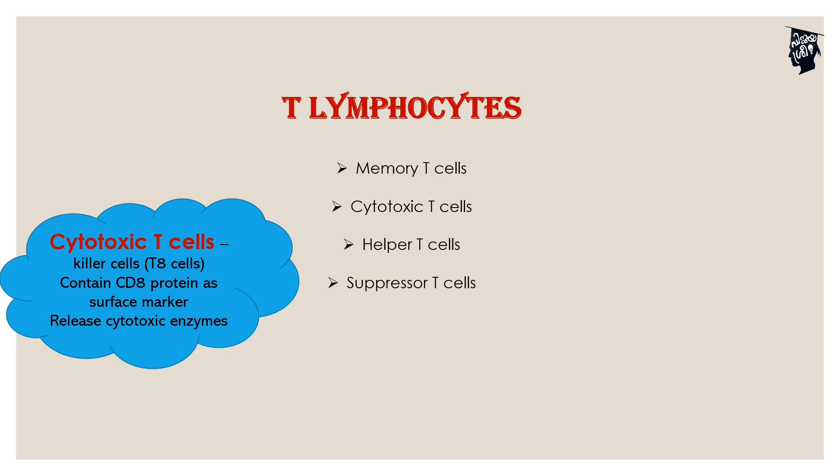First one is cytotoxic T-cells. Cytotoxic T-cells kill cells — they destroy foreign organisms by releasing cytotoxic enzymes. These cytotoxic T-cells carry the CD8 surface marker protein.